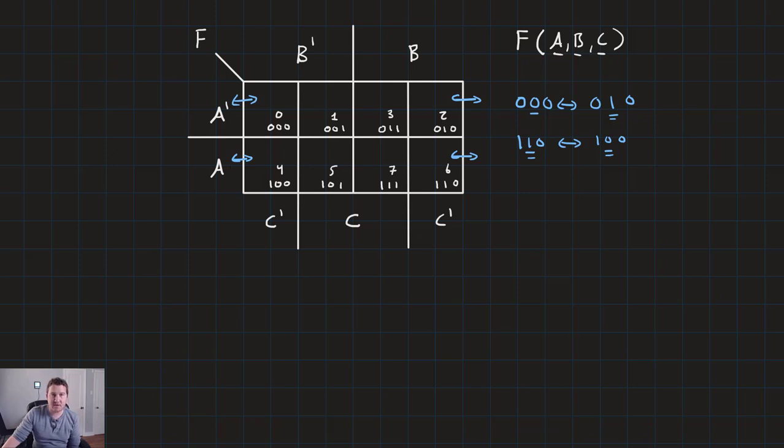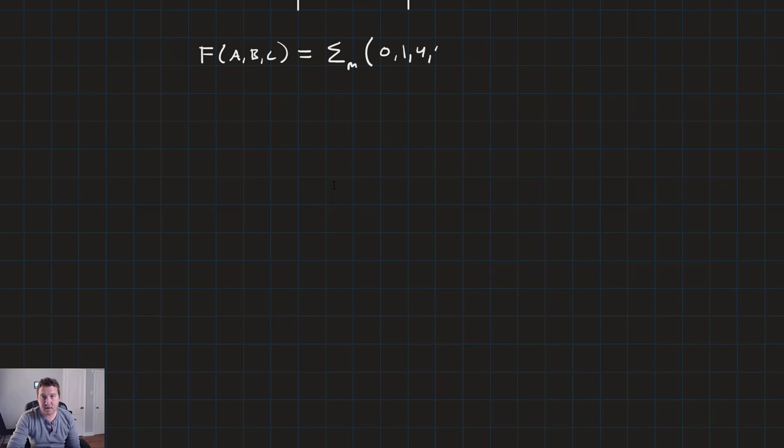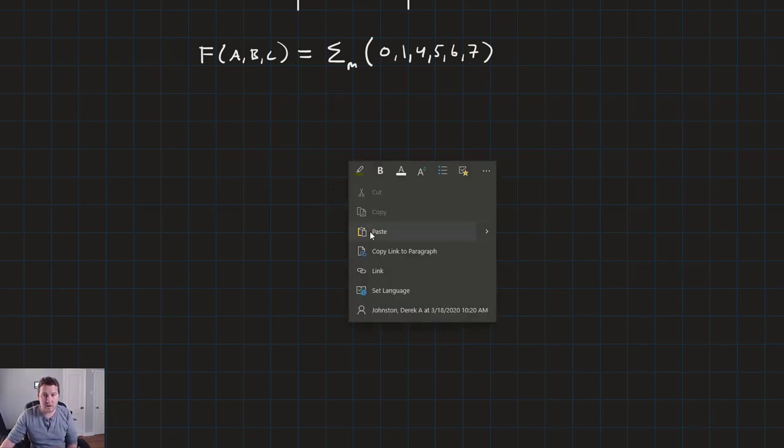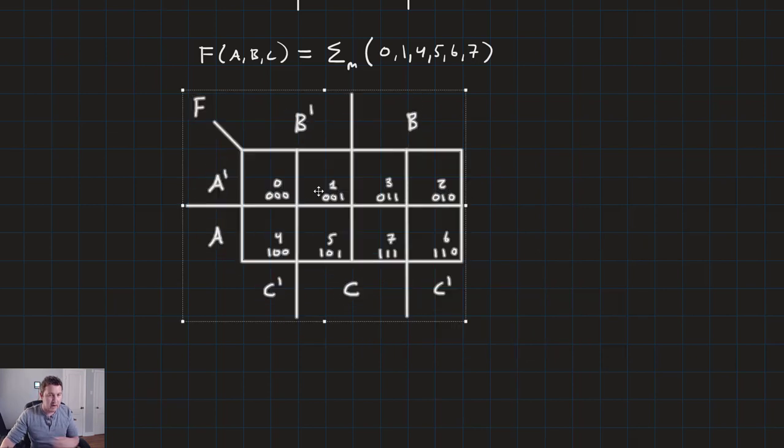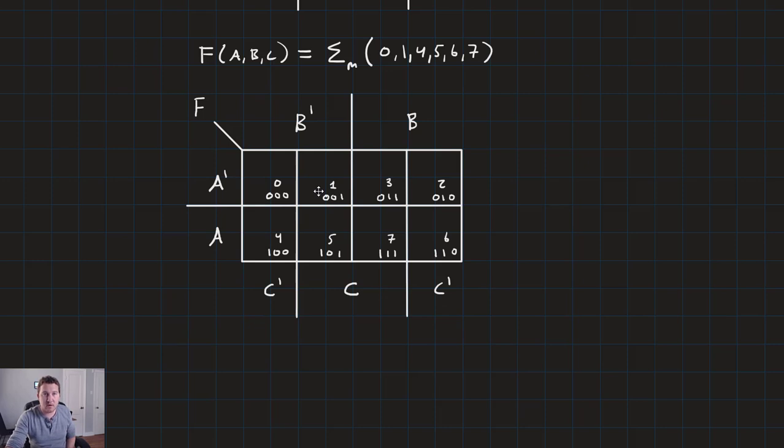So that's the sort of basic setup of a three variable map. Now let's go ahead and just work a couple of simple examples so we can kind of see how this all works together. So let's do this. Let's look at a function of three variables, F(A,B,C), and let's say that it's equal to the sum of minterms 0, 1, 4, 5, 6, and 7. So there we go. Let's go ahead and drop in our map that we already made. Now I'm going to go ahead and clean this up just a little bit more.